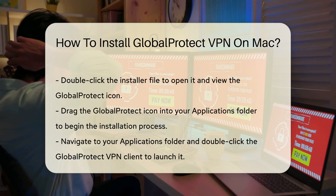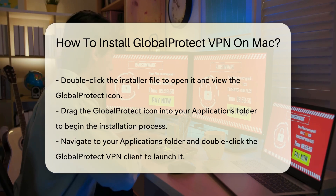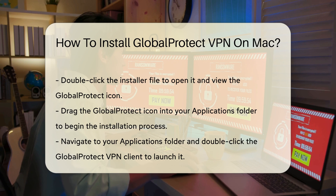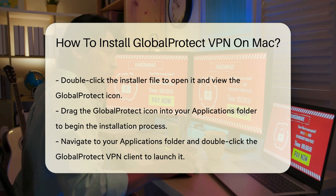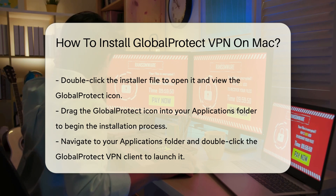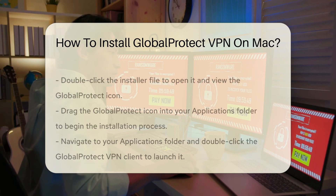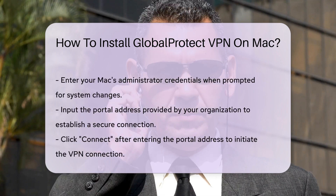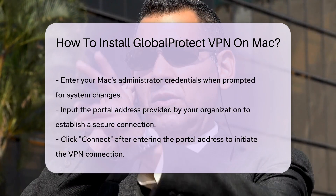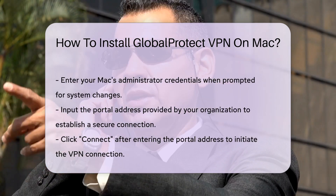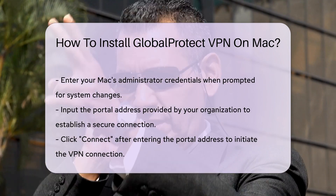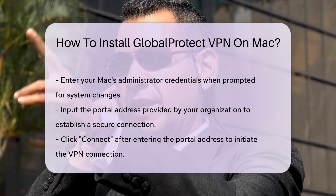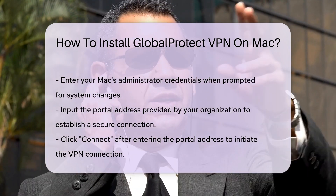After the application is copied, navigate to your Applications folder and find the Global Protect VPN client. Double-click the icon to launch the application for the first time. When prompted, enter your Mac's administrator credentials. This step may be necessary for the software to make the required system changes.